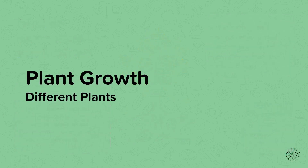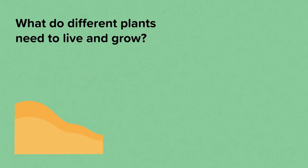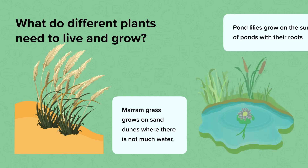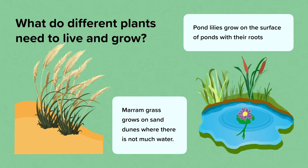Growth of different plants. All plants need light, water and carbon dioxide to survive, but not all plants need the same amount of these things. This is because plants grow best in different places. For example, marram grass grows on sand dunes where there is very little water, and pond lilies grow on the surface of ponds with their roots dangling below under water.